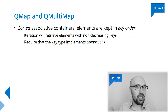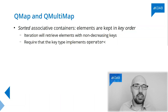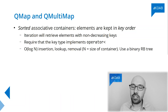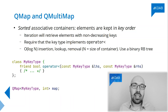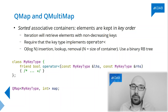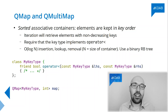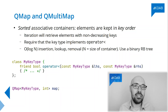Under the hood, QMap keeps things ordered using a binary search tree — in particular, something like a red-black tree. This gives us an idea of the complexity of operations over a map or a multimap: insertion, retrieval, lookup, and removal all have a cost which is logarithmic in the number of entries inside the map, simply because the depth of such a binary search tree is logarithmic in the number of entries.